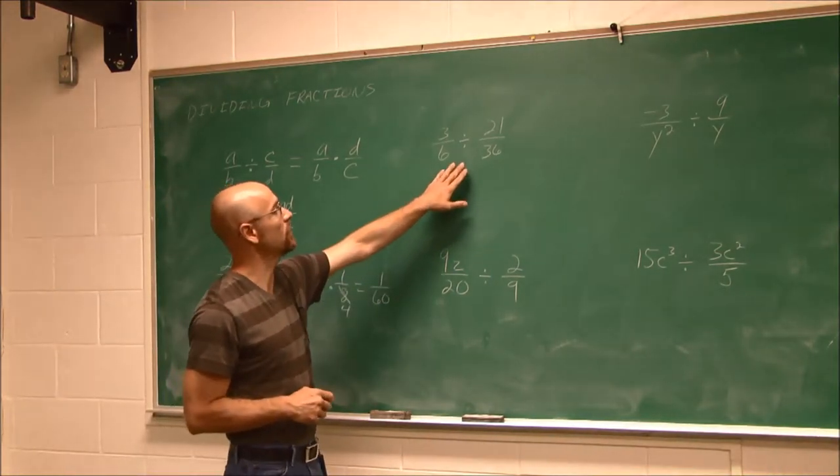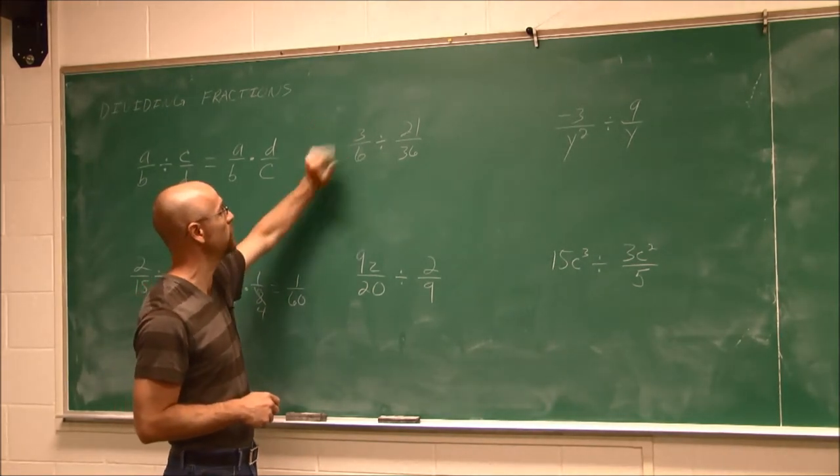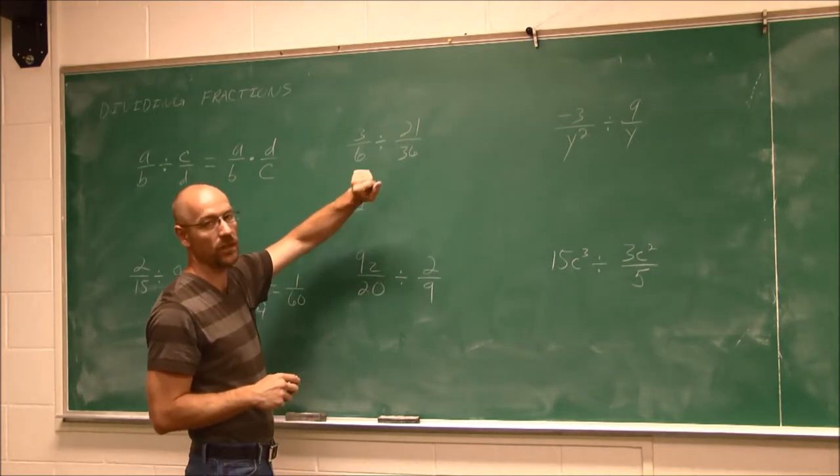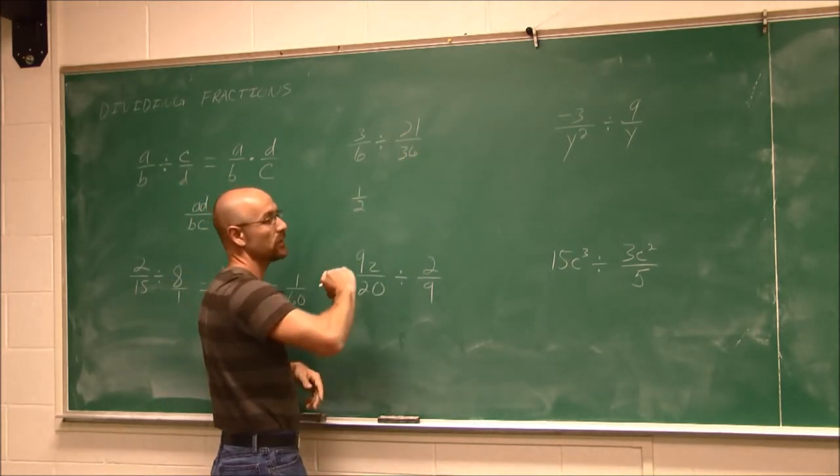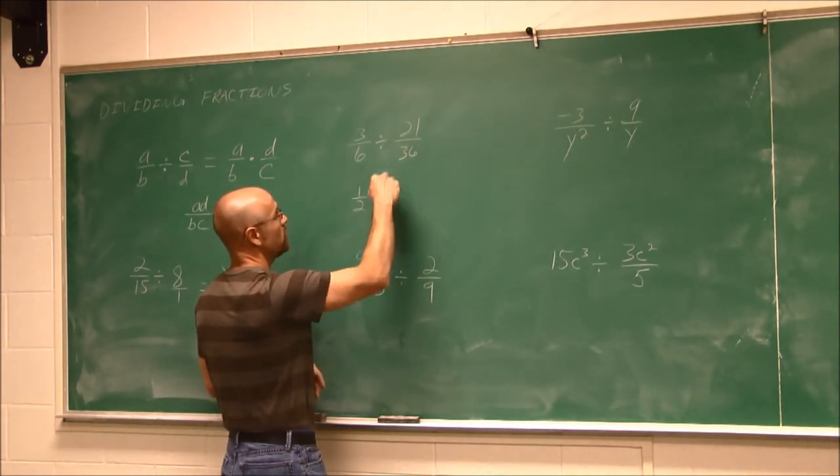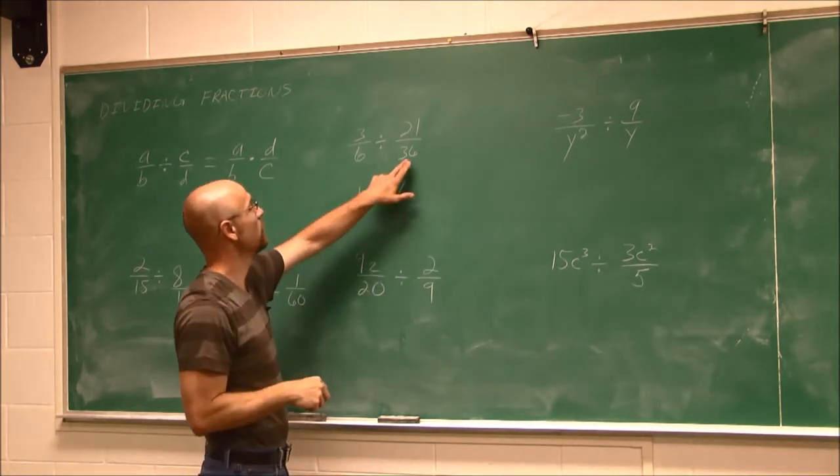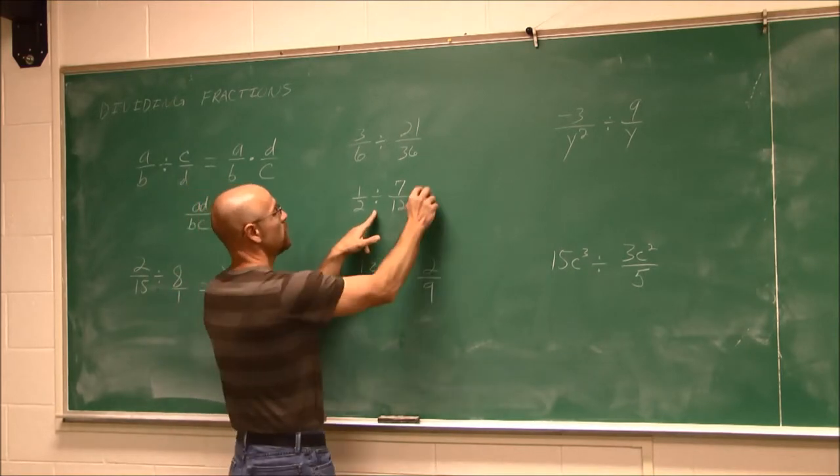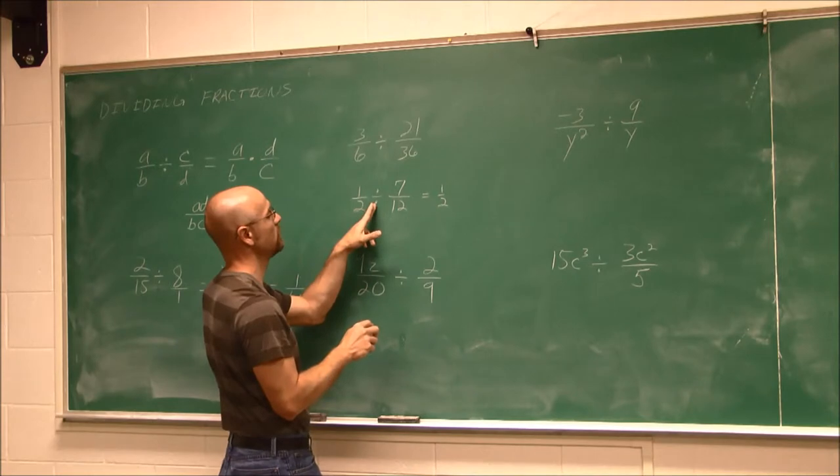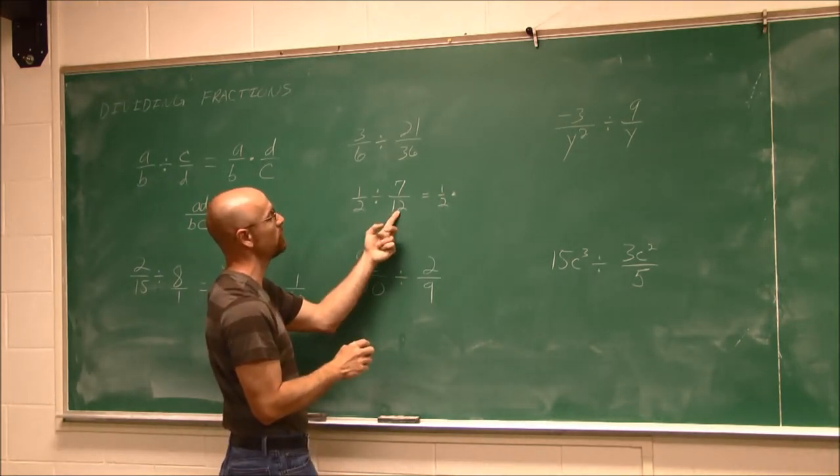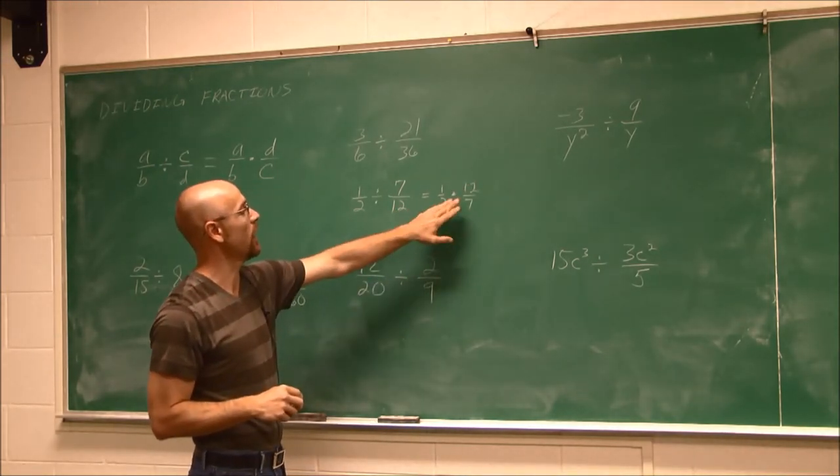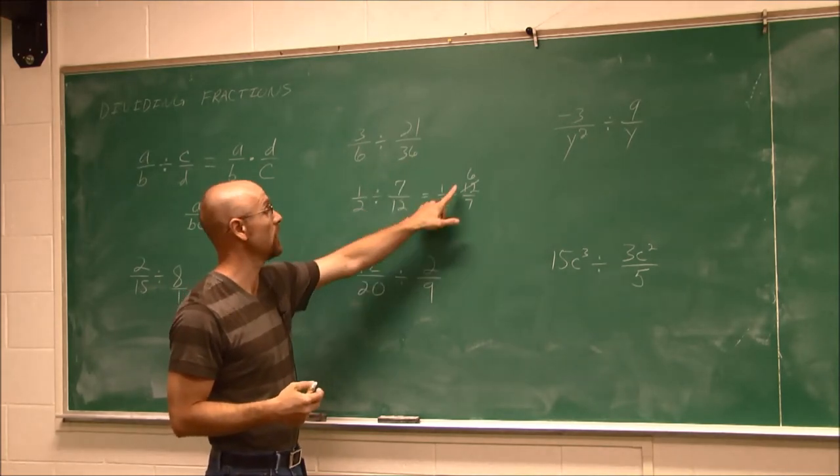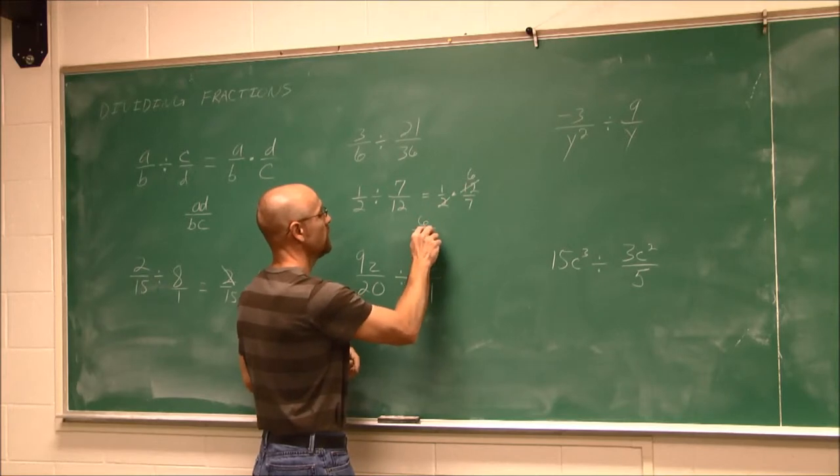Let's look at another example. Sometimes when we have fractions, it's best to reduce them first. I see 3/6 can reduce to 1/2. For 21 over 36, I see that 21 and 36 are both divisible by 3. 3 goes into 21 seven times, and 3 goes into 36 twelve times. Now I have smaller numbers, which are easier to work with. I'm going to change this to multiplication: 1/2 times the reciprocal of our divisor, 12/7. Now 2 and 12 have a common factor, so I can reduce. I have 1 over 1 times 6/7. So my solution is 6/7.